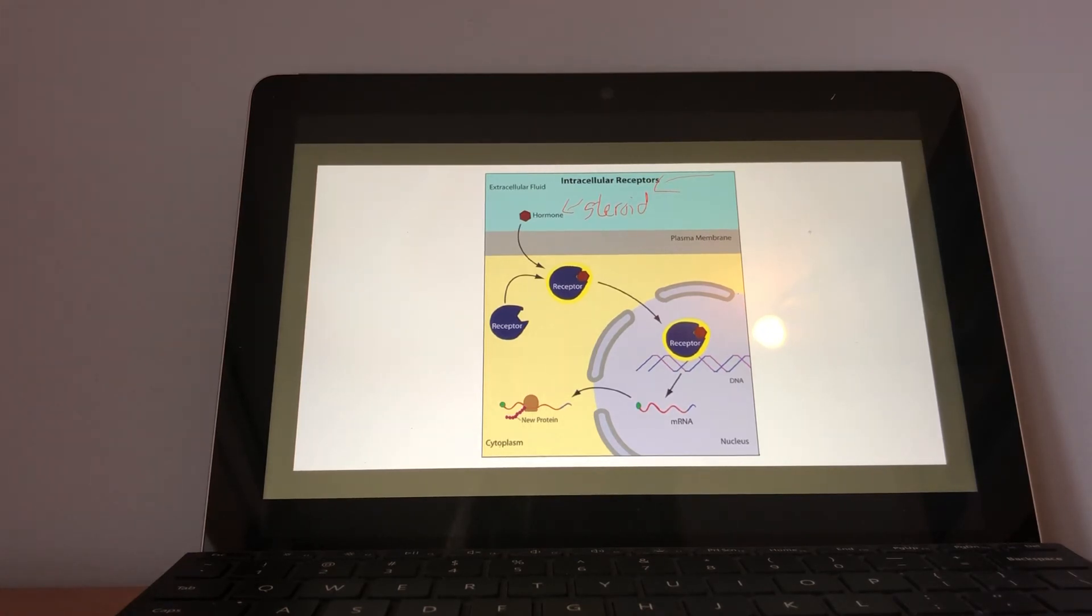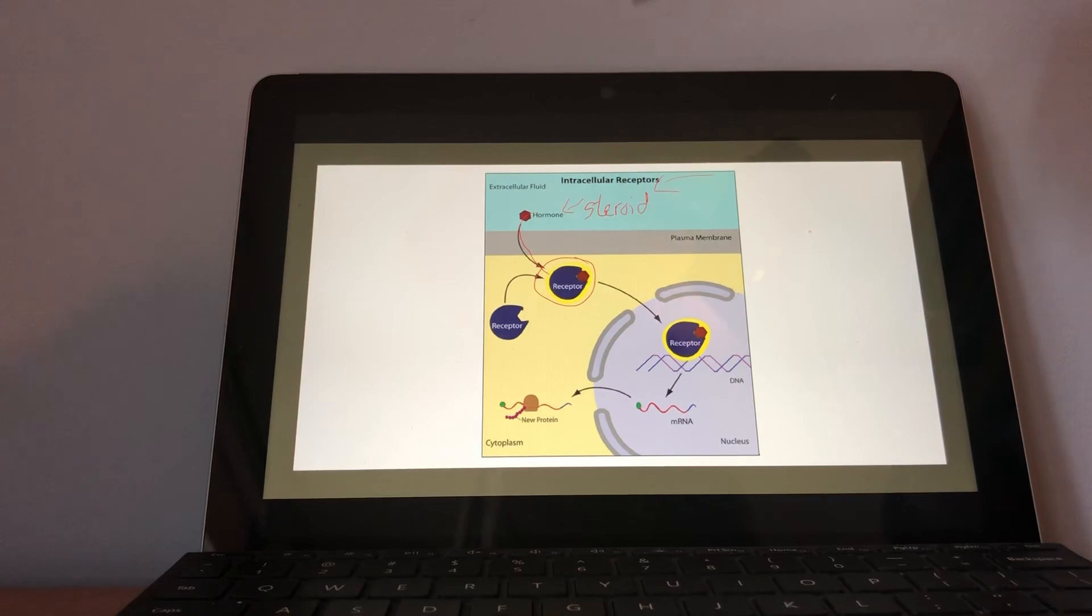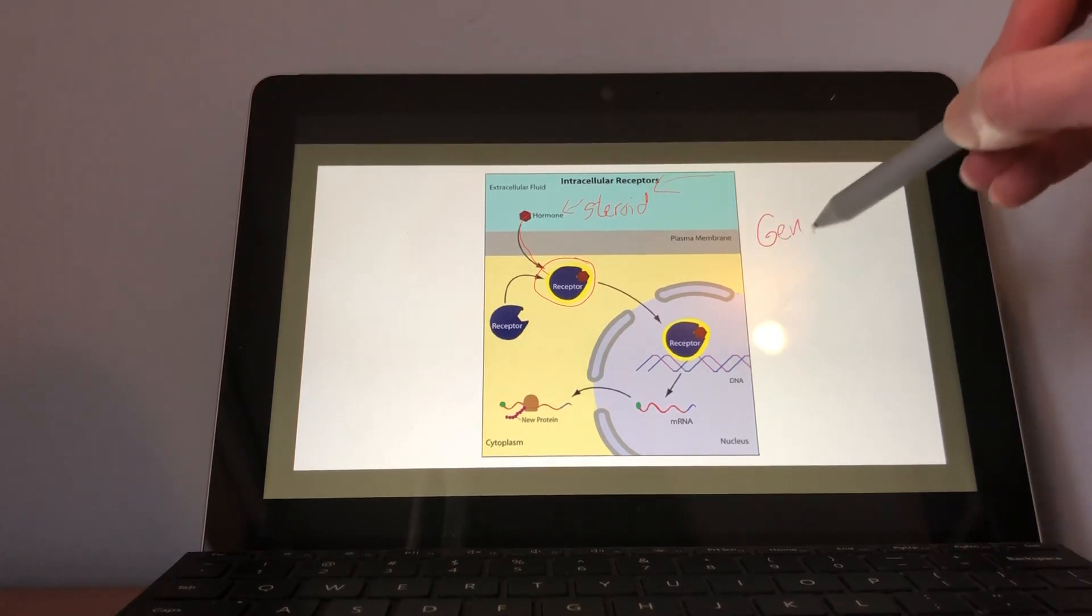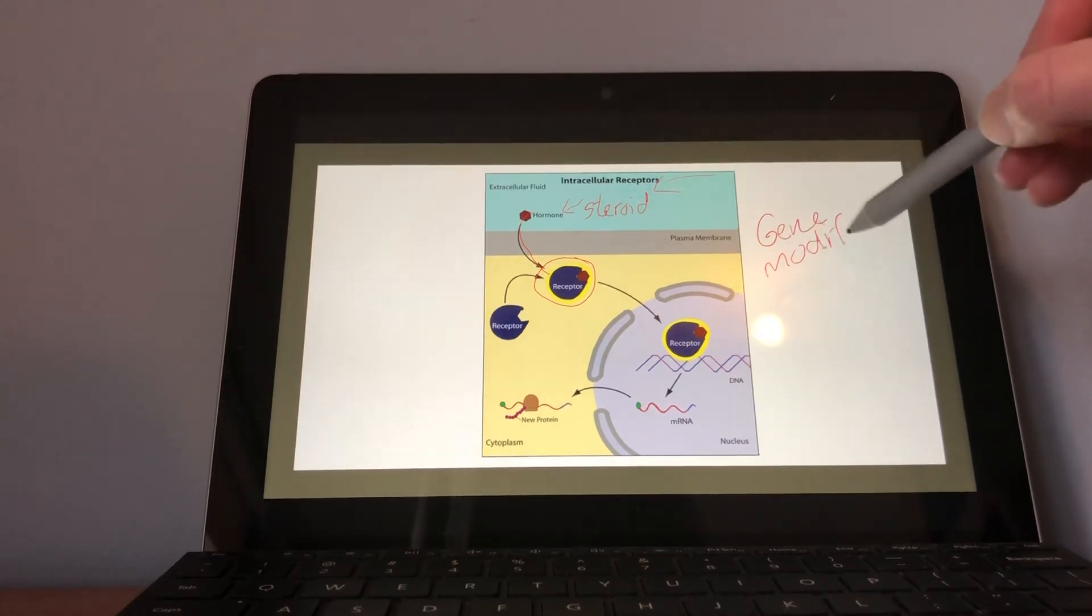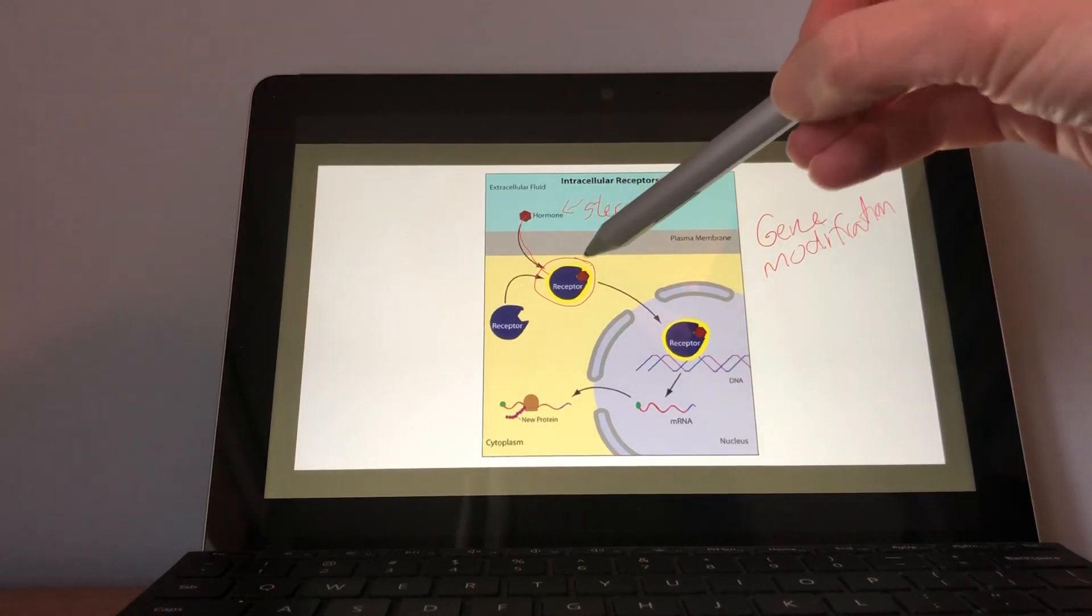So what happens with steroids is they can actually, they're soluble, so they can move through the plasma membrane even though it has a slightly negative charge, and it can go in and it will attach to the receptor that's already in there. Now what's really interesting about steroids is they can do another type of modification in the cell, and what this one is going to be is gene modification. And if you recall when we were talking earlier, we talked about how you can have certain genes expressed at certain times. This is a way of controlling it.